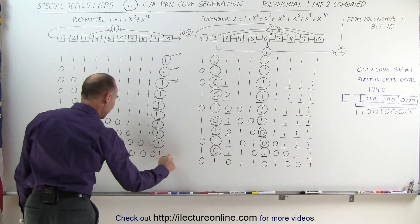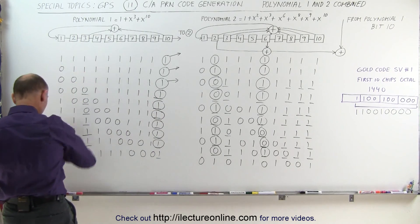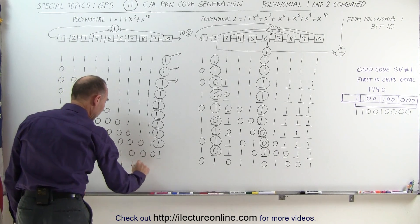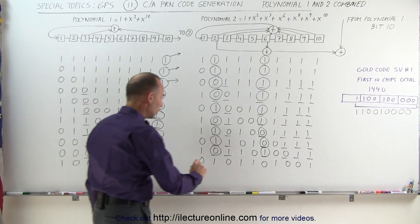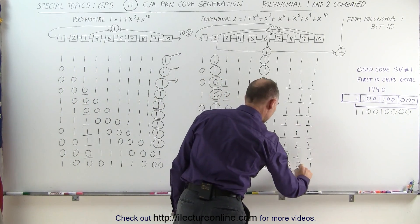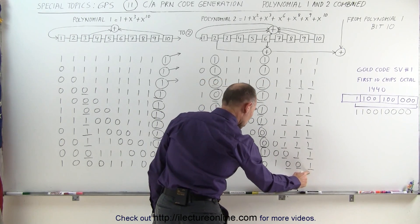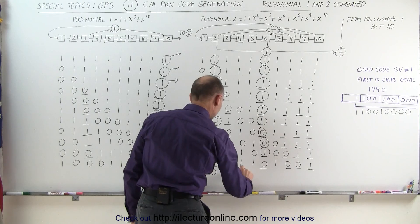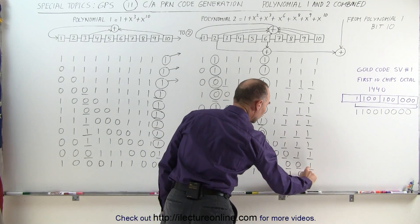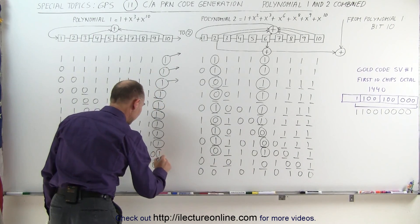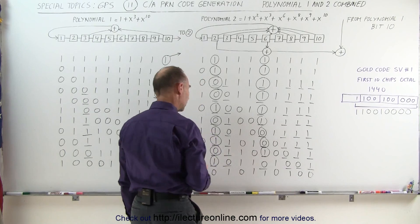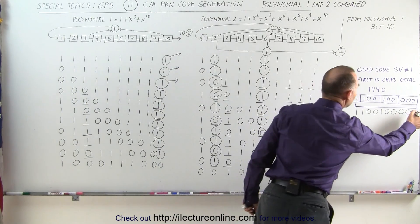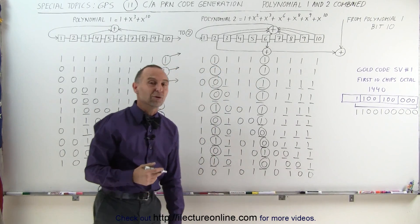And the last one: we grab 3 and 10 — 0 plus 1 is 1 — that goes in, everything else shifts over. Over here we grab the 2nd, 3rd, 6th, 8th, 9th, and 10th — 1 plus 1 is 2, that's even, becomes a 0, goes in the front, everything else shifts over. We grab the 10th bit position, the 2nd bit position, and the 6th bit position — we have a 1, a 1, and a 0 — that's 2, which becomes 0. That gives us the 10th chip. And that's how the process continues in those two registers.